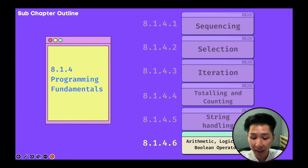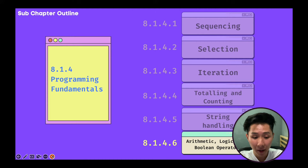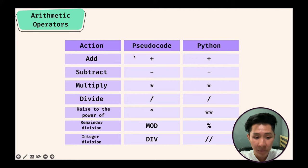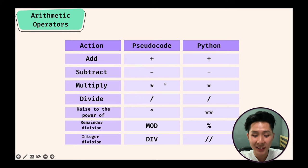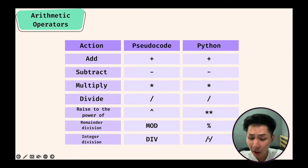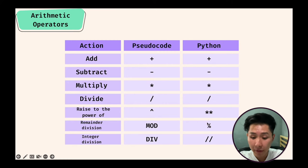Now we have a few more fundamentals to go through: arithmetic, logical, and boolean operators. These are all the arithmetic operators we've been using along the way — plus, minus, multiply, and so on. We've already been using power (**) and remainder (%). There's also integer division.